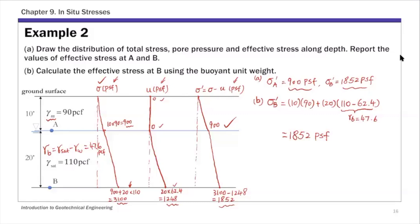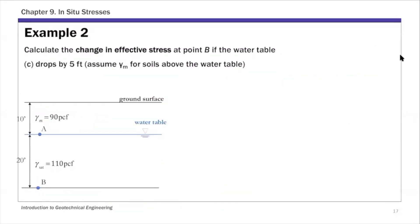For part C, we calculate the change in effective stress when the water table changes. There are three scenarios: parts C, D, and E. In part C, the water table drops by five feet. We continue to use gamma moist for soil above the water table. Let's place the water table at its new location — dropped five feet from the original position.